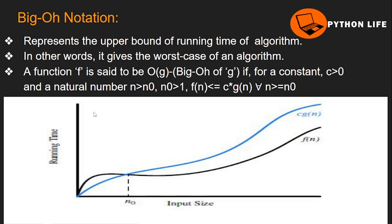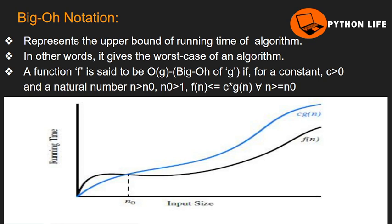Using a graphical representation of time complexity, we use the function f(n). As the input size increases, the running time also increases. We draw f(n) such that it represents the upper bound. The function f is said to be Big O of g — meaning Big O of g(n) — if for a constant c greater than 0 and a natural number n greater than n₀, where n₀ ≥ 1, f(n) ≤ c·g(n) for all n > n₀.